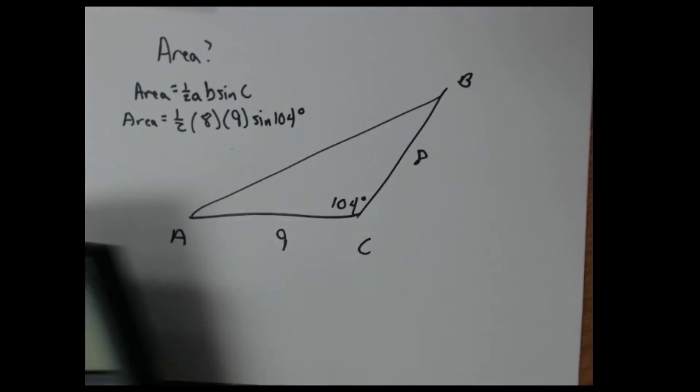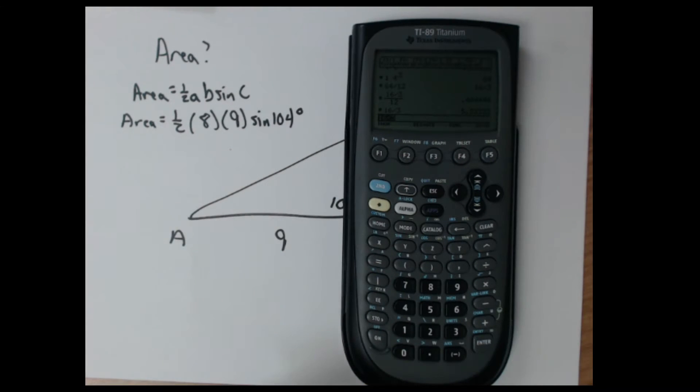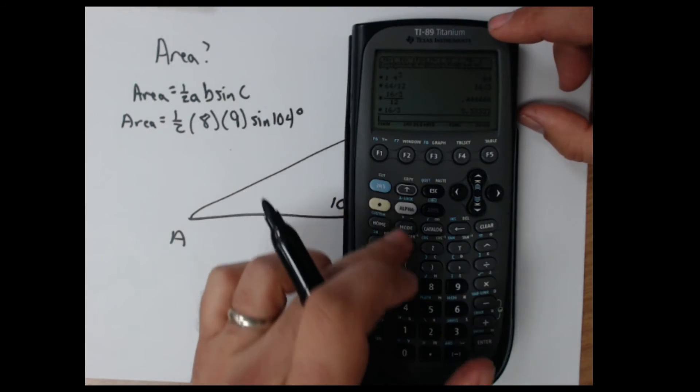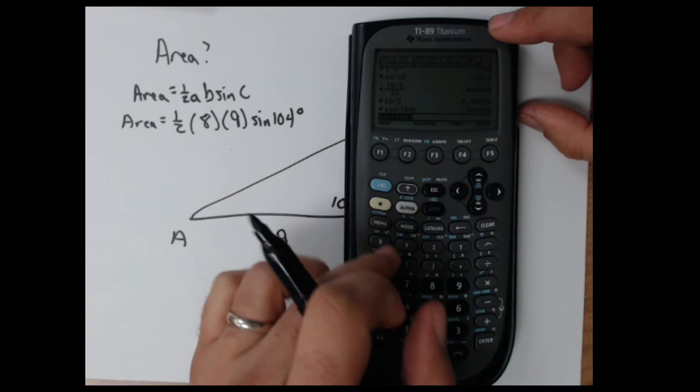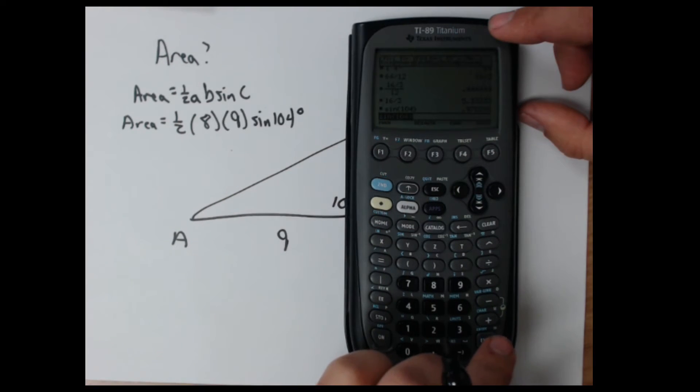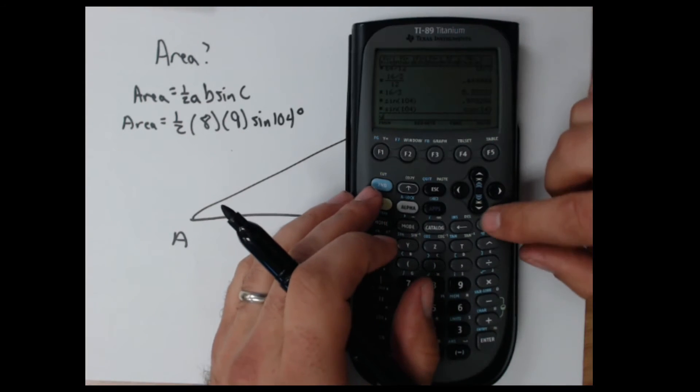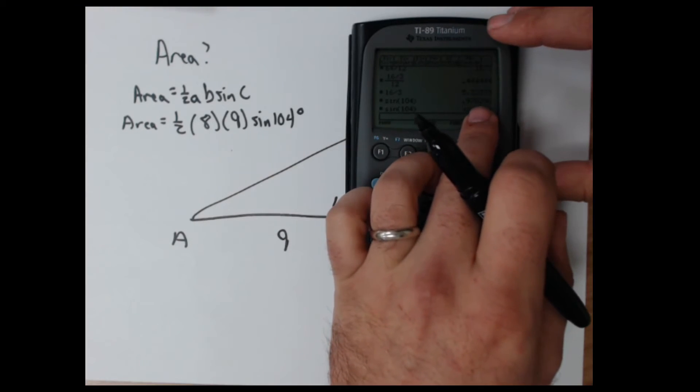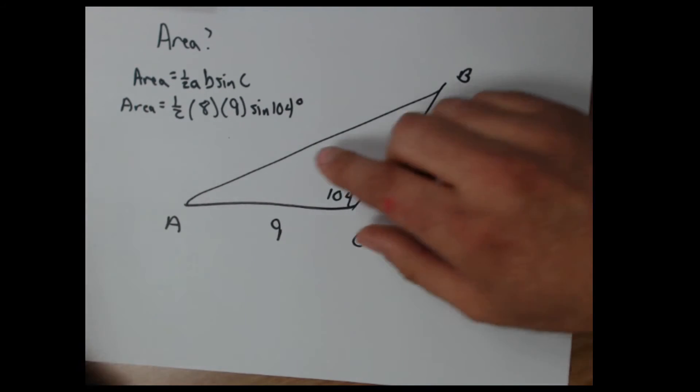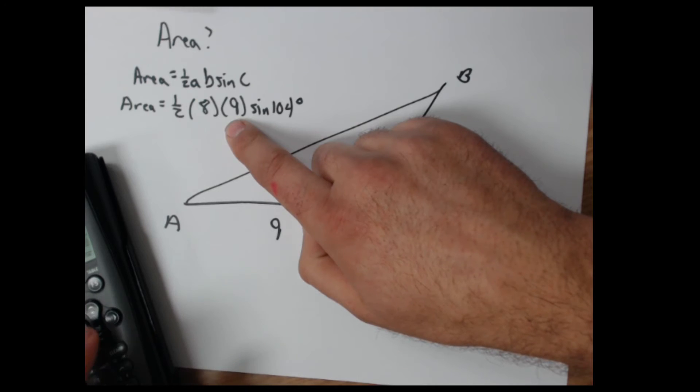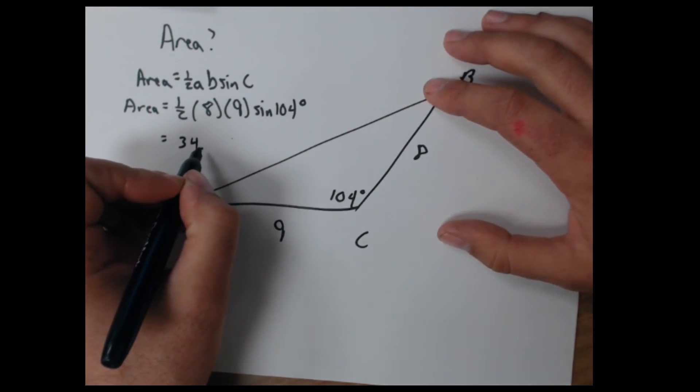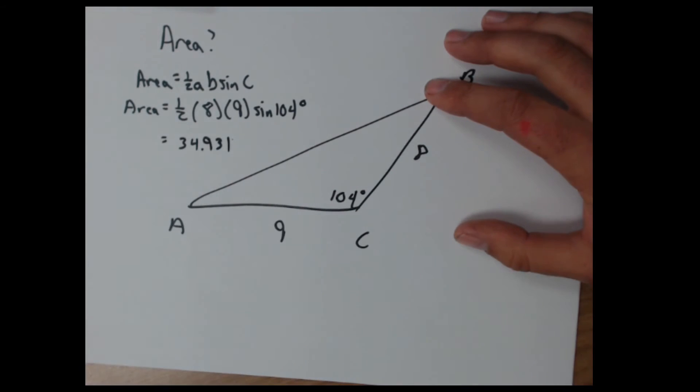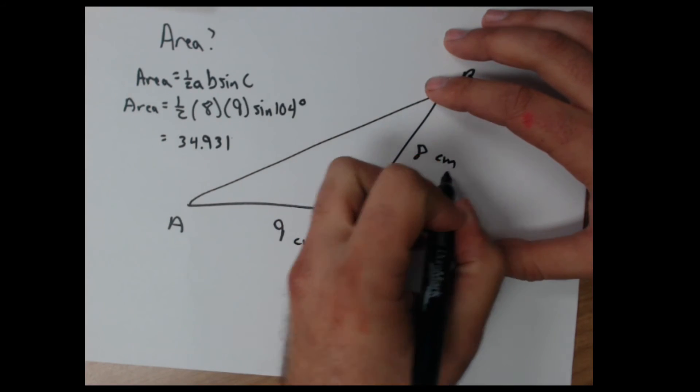Type that into your handy-dandy calculator. I have the TI-89 Titanium. And we hit sine 104. Make sure it's in degrees. That's good. 9.970. And then I multiply that by the 9 and by the 8. Times 9, times 8, times 1 half, 34.931. That is the area. These were in centimeters. So this is centimeters squared.